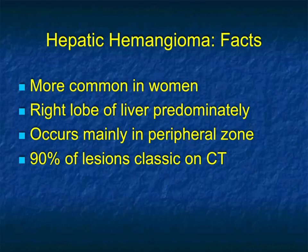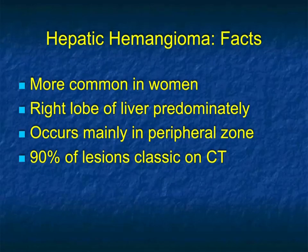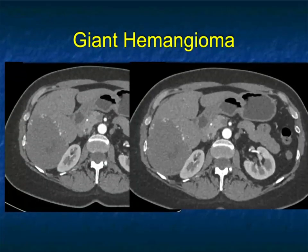In terms of hemangiomas, it's more common in women, more common in the right lobe of the liver, and more common peripherally than centrally within the liver. As I mentioned, the majority of lesions are classic.